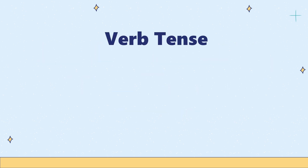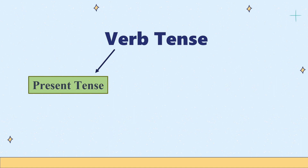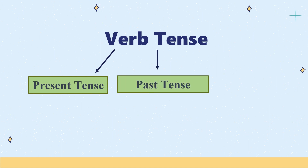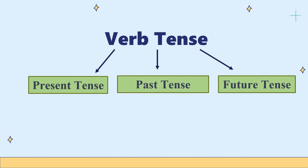Verb tenses are divided into three categories: present tense, past tense, and future tense.